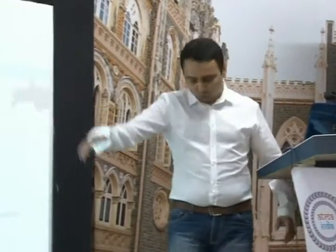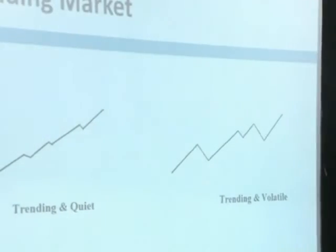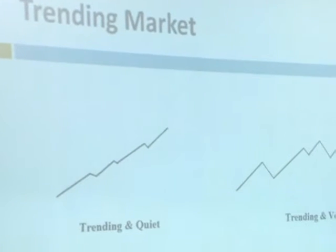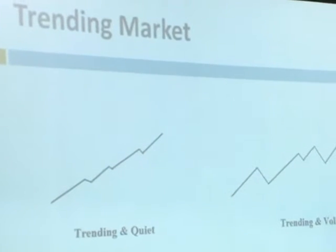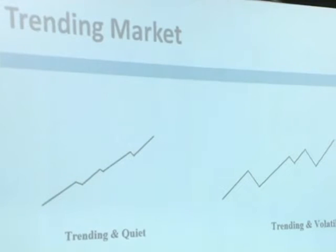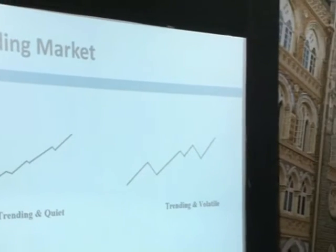These are the types of trending market conditions. On one side it's trending and quiet; on the other it's trending and volatile. The quiet and smooth phase is specifically the starting phase of the trend. Where it gets volatile and trending is near the end of the trend. So accordingly you have to place your bets, or accordingly you have to change your system or follow the system.